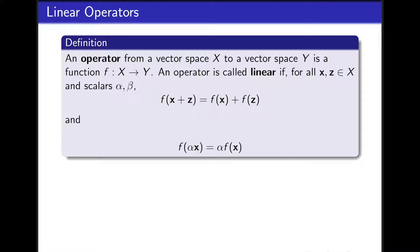An operator is called linear when it can be distributed across addition and when scalars can be pulled out in front of the operator. That is when f(x + z) equals f(x) + f(z) and when f(αx) equals α times f(x).